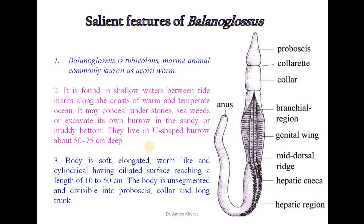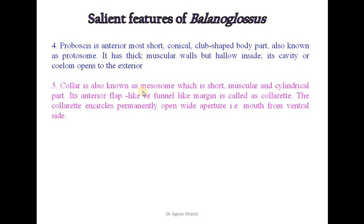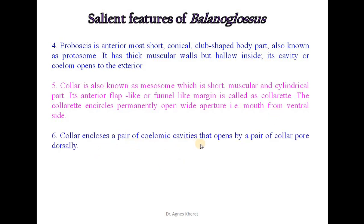Body is soft, elongated, worm-like and cylindrical with a ciliated surface, reaching a length of 10 to 50 cm. The body is unsegmented and divisible into proboscis, collar and long trunk region. Proboscis is the anteriormost, short, conical, club-shaped body part also known as protosome, with thick muscular walls but hollow inside. Its cavity or coelom opens to the exterior. Collar, also known as mesosome, is a short, muscular, cylindrical part. Its anterior flap-like margin is called the collarete, which encircles the permanently open wide mouth aperture from the ventral side. Collar encloses a pair of coelom-like cavities that open by a pair of collar pores dorsally.